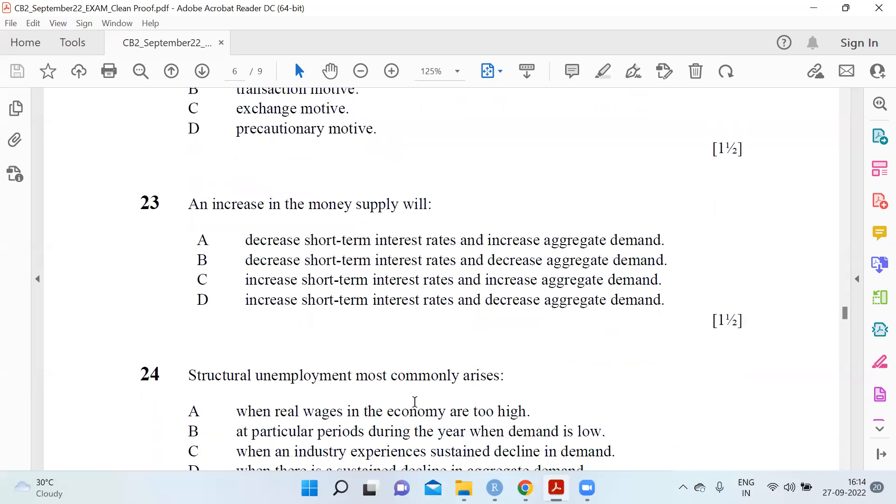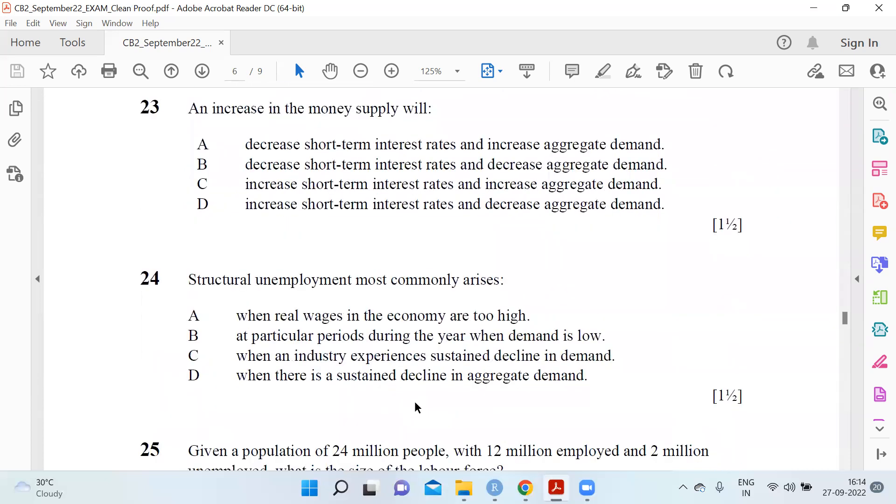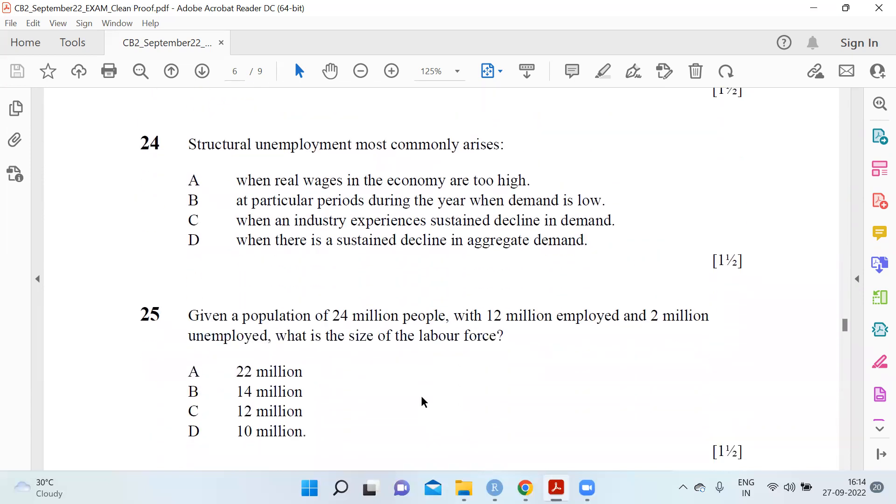Structural unemployment most commonly arises when we have particular periods during the year when the demand is low. Question 25: Given a population of 24 million people with 12 million people employed and 2 million unemployed, what is the size of the labor force? Using the formulas, you can get directly 25 B, 14 million.